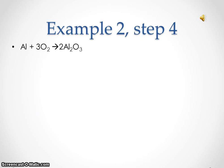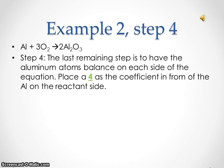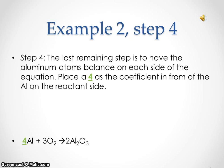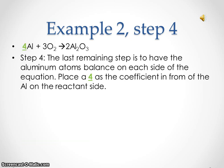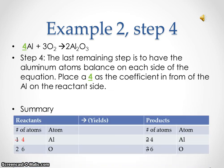Example two, step four. We added a three coefficient in front of the O₂ on the reactant side. The last remaining step is to have the aluminum atoms balance on each side of the equation. Place a four as the coefficient in front of the aluminum on the reactant side. We now have four aluminum atoms and six oxygen atoms on the reactant side, and four aluminum atoms and six oxygen atoms on the product side. We are balanced.